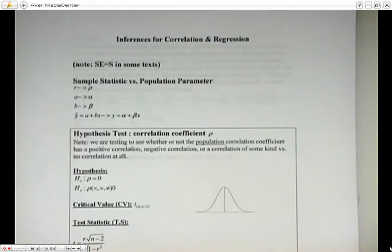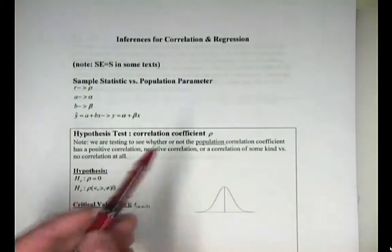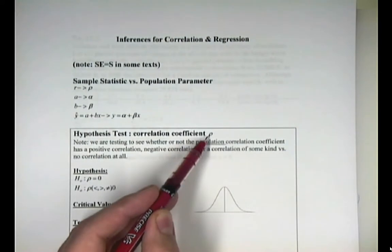Okay students, so this is page 113 of the notes, and we're going to actually be doing inferences for correlation and regression, meaning we're going to be doing hypothesis testing in regressional analysis. So one hypothesis test that we can do is for the correlation coefficient. Now, before, when we calculated the correlation coefficient, it was r, and that is the sample correlation coefficient. But when we talk about the population correlation coefficient, we're going to use the Greek letter rho.